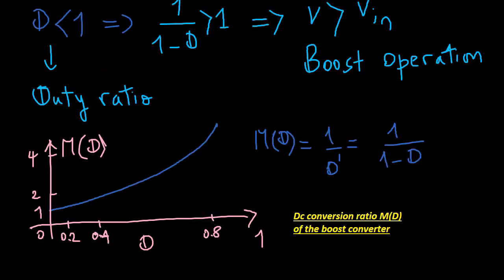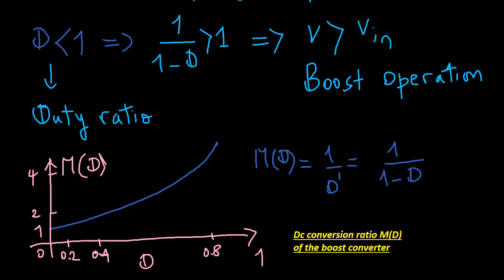The output voltage increases as D increases, and in the ideal case, tends to infinity as D tends to 1. So the ideal boost converter is capable of producing any output voltage greater than the input voltage. There are of course limits to the output voltage that can be produced by a practical boost converter.